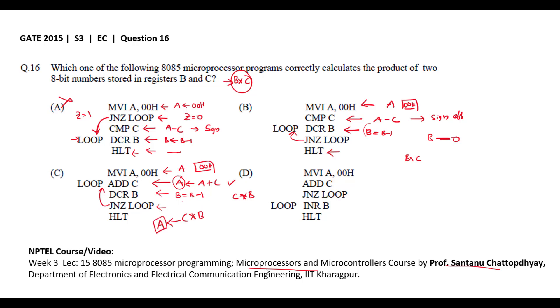Once B equals 0, the halt instruction is executed and the program terminates. So Option C is the correct option.